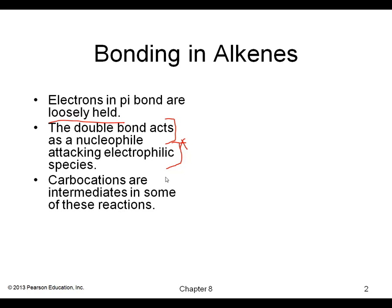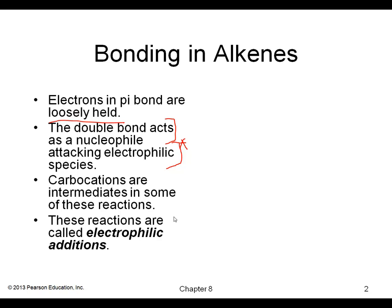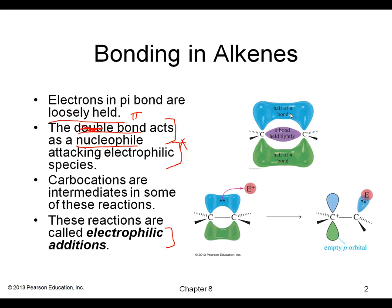We're going to see carbocation intermediates in these reactions. As a result, these are called electrophilic addition reactions to double bonds, where an electrophile will be attacked by the pi bond acting as a nucleophile. To be precise, it's not the double bond acting as a nucleophile — it's the pi bond or the pi electrons. Remember, half of the pi bond is on top and the other half is on the bottom.